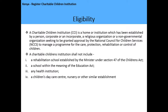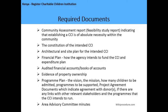The eligibility criteria is as follows. A charitable children's institution (CCI) is a home or institution established by a person, corporate or incorporate body, a religious organization, or a non-governmental organization seeking approval from the National Council for Children's Services to manage a program for the care, protection, rehabilitation, or control of children. A CCI shall not include a rehabilitation school established by the minister under Section 47 of the Children's Act, a school within the meaning of the Education Act, any health institution, a children's day care center, nursery, or any other similar establishment.